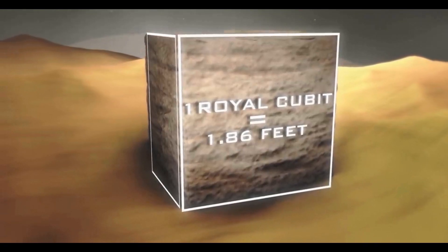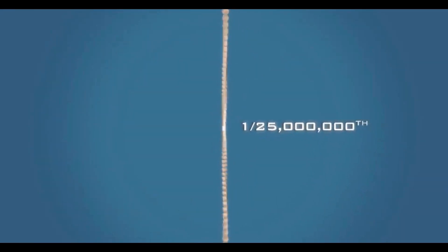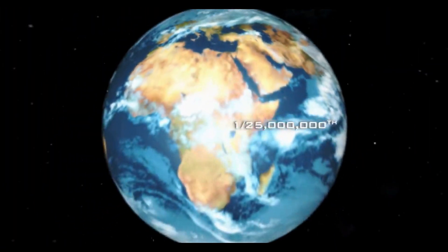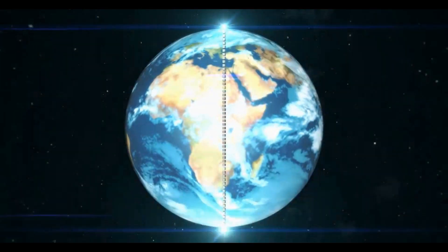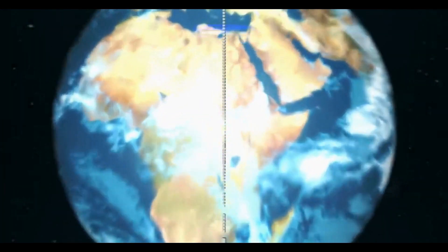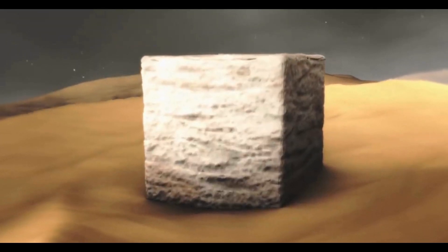And what's interesting about this cubit is that it is exactly one 25 millionth of the polar diameter of the Earth, meaning the distance from the North Pole to the South Pole of the Earth. Chop it up into 25 million pieces, and it's perfect. It's a cubit.